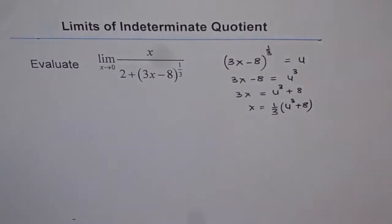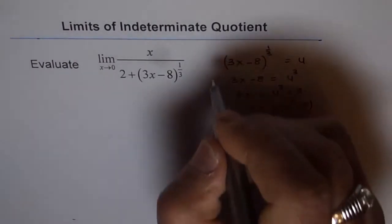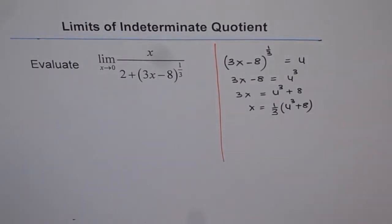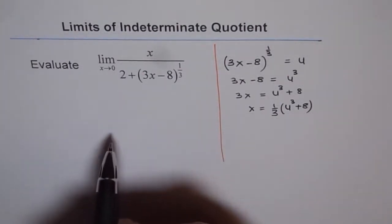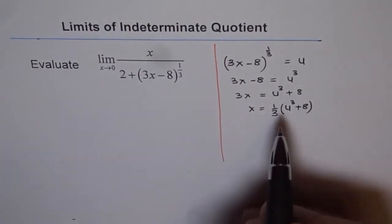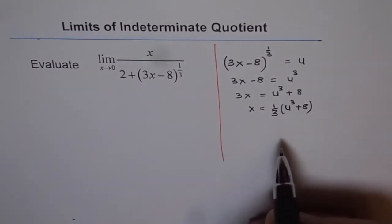So that is one part of substitution. So we defined variable u for the radical part and found that x is equals to one third of u cube plus 8.